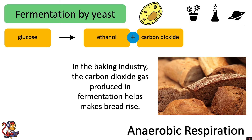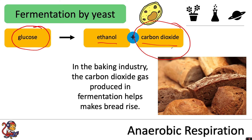In the baking industry, the carbon dioxide gas produced in fermentation helps make the bread rise. The yeast will break down the sugar or glucose in your bread mixture and produce ethanol and carbon dioxide. So initially your bread mixture contains alcohol, but as soon as you put it in the oven, the ethanol has a low boiling point so it all evaporates. However, the carbon dioxide is the really useful product in the baking industry because it's the carbon dioxide gas that helps make the bread rise.